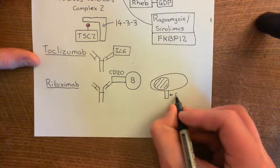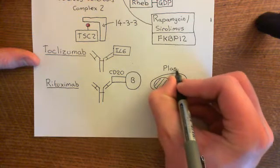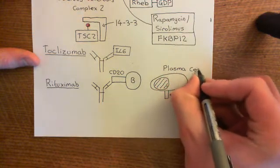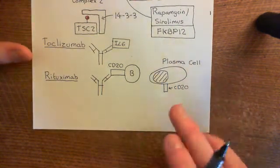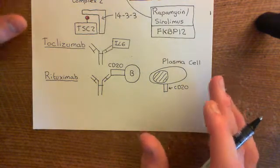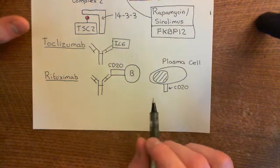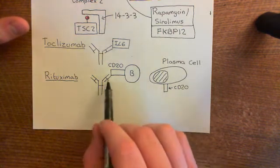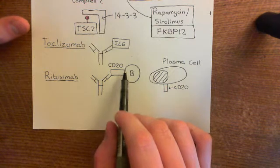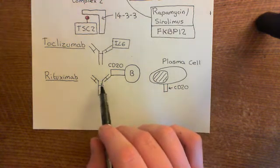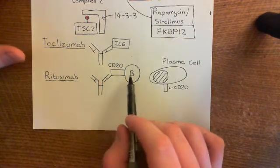There is a CD20 molecule on the surface of plasma cells. Basically, if you administer rituximab, it will bind to the CD20 molecules on the surface of the B-cells or plasma cells. And then what does this do? Well, it's going to lead to the destruction of the B-cells and plasma cells. Effectively, what you've got on the surface of these cells is a molecule we could view as the antigen, and then an antibody.